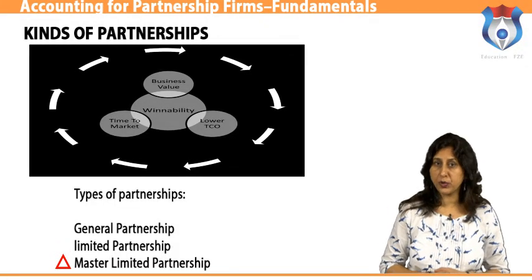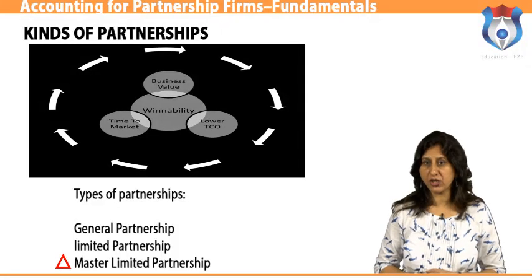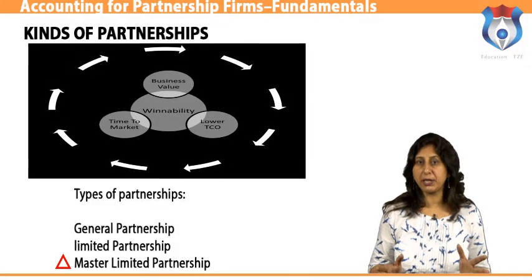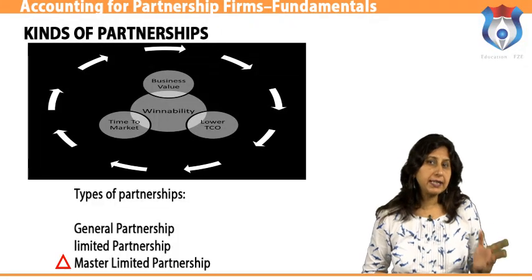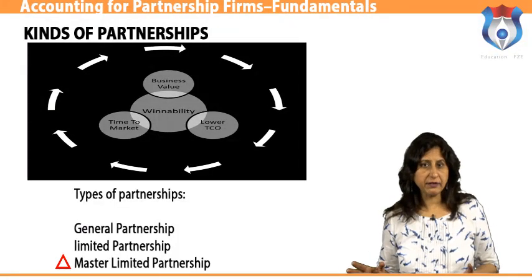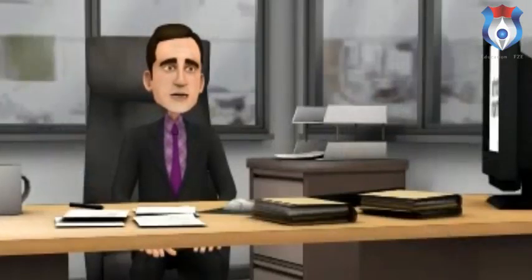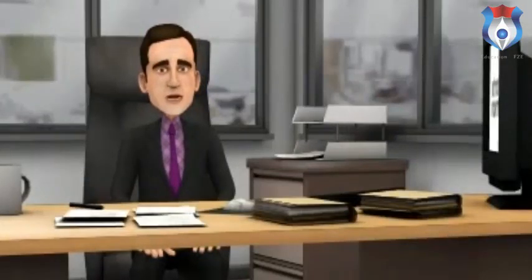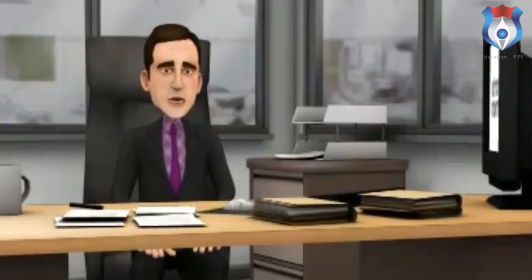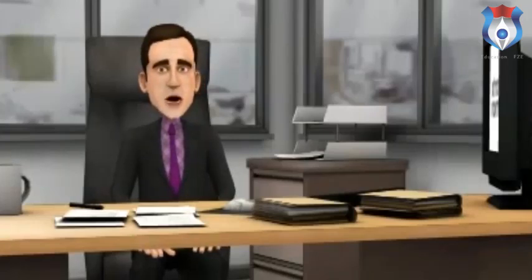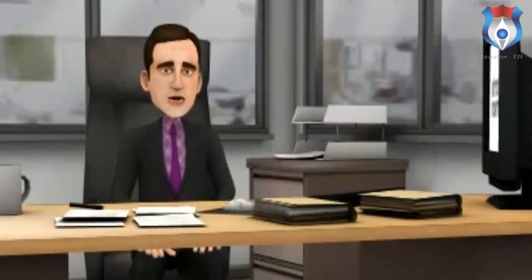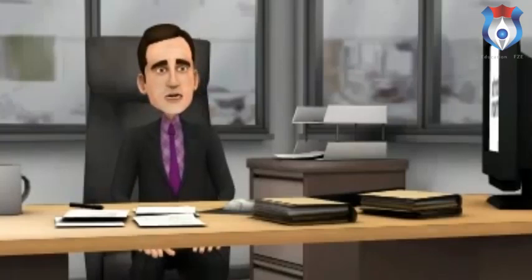Master limited partnership — these partnerships are similar to corporations, trading partnership units on listed stock exchanges. They have many advantages similar to corporations, such as limited liability, unlimited life, and transferable ownership. Master limited partnerships are publicly traded. There are two types of partners: the limited partner, who provides the capital and receives periodic income distributions from the master limited partnership's cash flow.